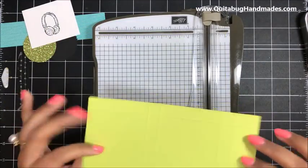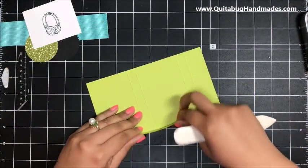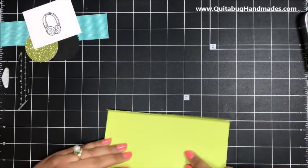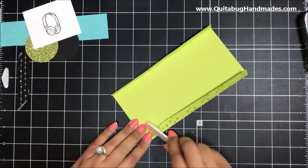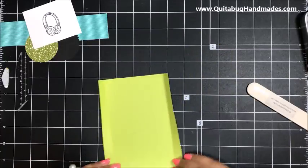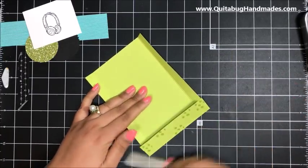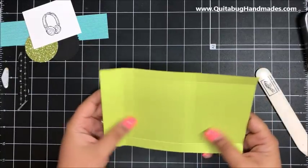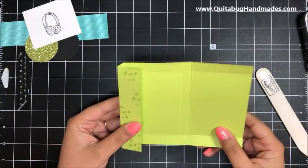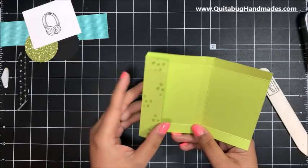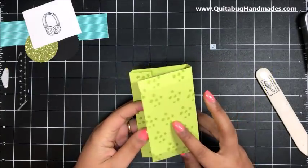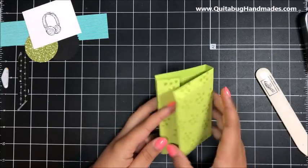That's it, pretty easy scoring. I've got my bone folder here and I'll just give all of those score lines a nice crease. When you fold this holder over, you've got one side that is a little bit thinner than the other.